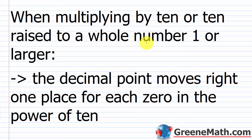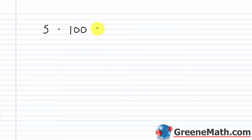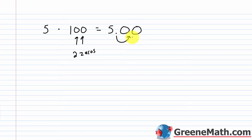Before we get into scientific notation, I want to review some things from pre-algebra. When multiplying by 10 or 10 raised to a whole number of 1 or larger, the decimal point moves right one place for each zero in the power of 10. For example, if I take 5 and multiply by 100, I can write 5 as 5.0 and move the decimal point two places to the right — one for each zero — ending up with 500.